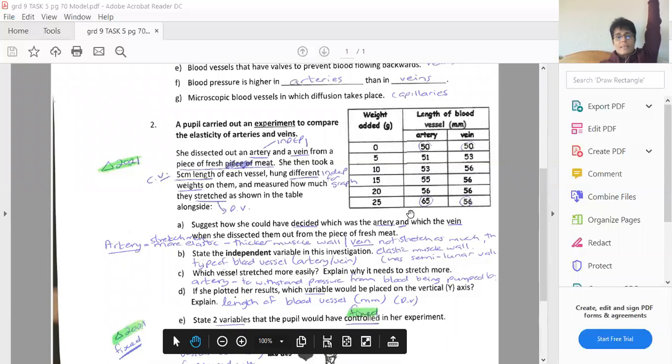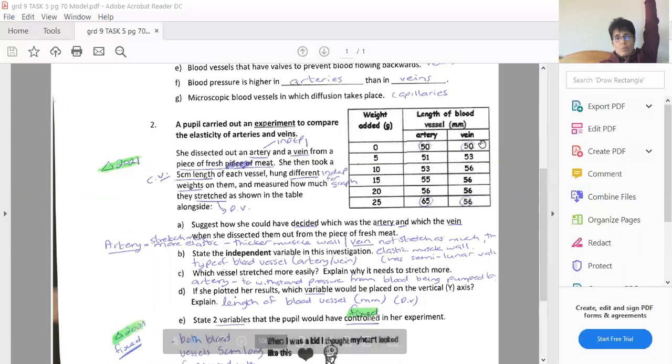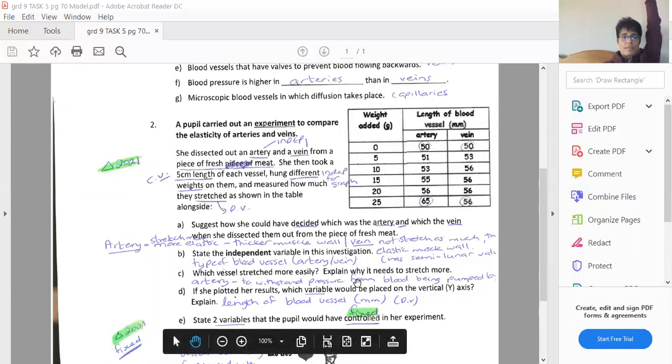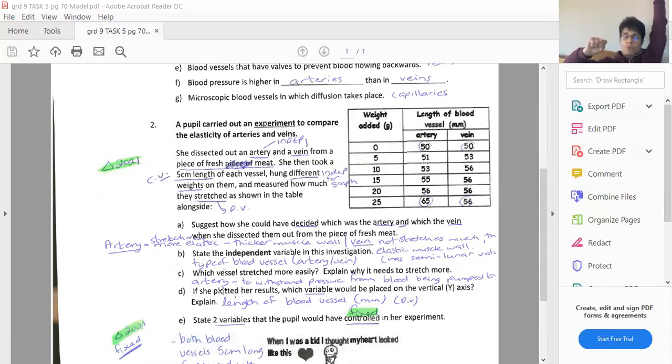Which vessel stretched more easily? Well, if we look at the data here, you can see that the artery at one, they were both initially 50 millimeters long or five centimeters. And it is now 65 centimeters. So it's increased by about one and a half centimeters, whereas the vein only went up or stretched, became a little bit longer, just over a half a centimeter. So which vessel stretch more easily? Explain why it needs to stretch more. The artery, because it's right near the heart. Okay. And it needs to have more elasticity in it to be able to stretch and recoil as the heart is pumping blood through it.